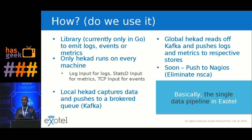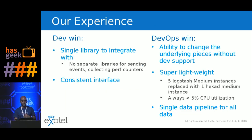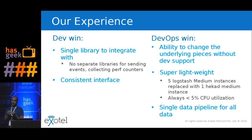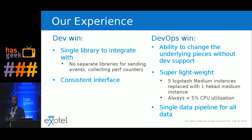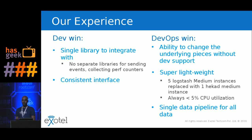Essentially we want HECA to be the single data pipeline at Exotel. It is a dev win because there is a single library that devs integrate with — no separate libraries for logging, eventing, metrics. From a DevOps perspective, the brilliant thing is the DevOps engineer can change the underlying pieces without any dev support. For example, if you want to switch from InfluxDB to Datadog for metrics, just change the HECA config to push metric data to Datadog, then cut off InfluxDB — all without a single line of code change. It is super lightweight, written in Go, super fast — especially coming from Logstash, you will find it a welcome relief.